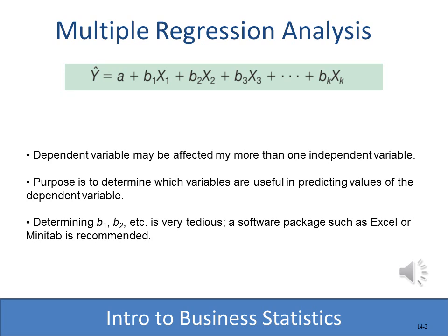We still have y-hat, the predicted value of y, and that equals the intercept a plus the slope of x variable 1 plus the slope times x variable 2, and so on. We're going to use Excel's regression analysis to come up with the slopes of each of those variables, and then predict a value of y based on the x values we have.